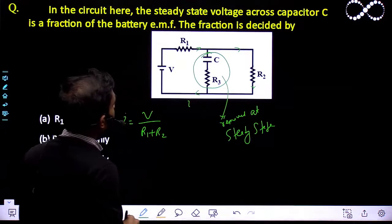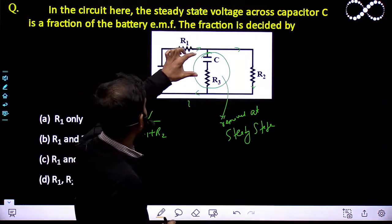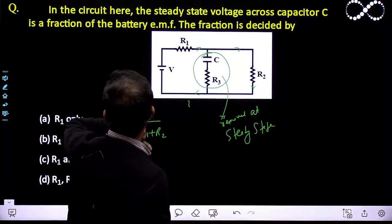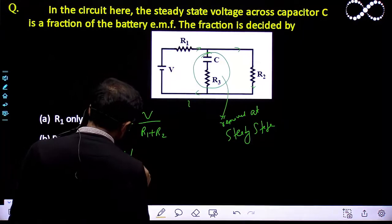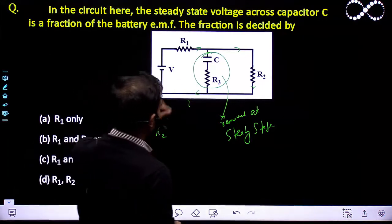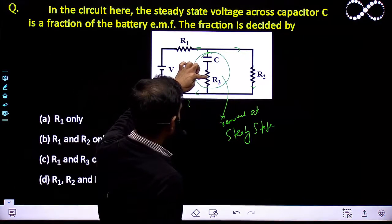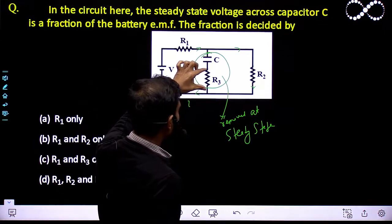Now if I want to find out the potential difference across this capacitor, let us assume the potential difference across capacitor is Vc. Since there is no current through R3, there will be no potential drop across this resistor.